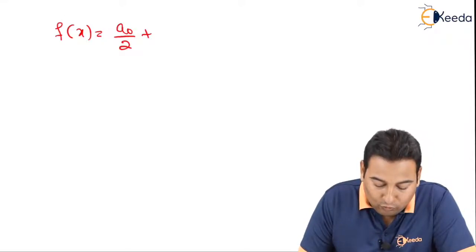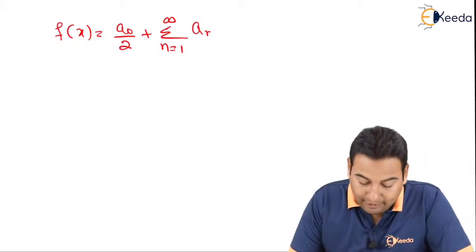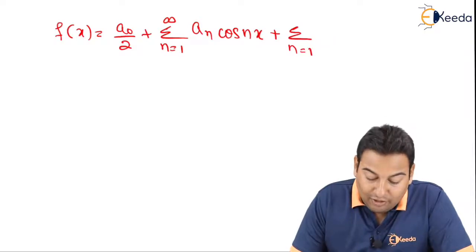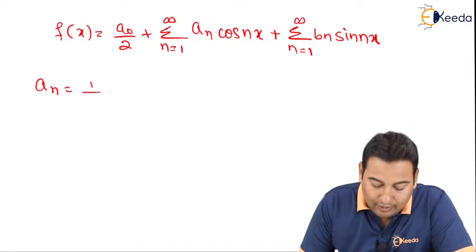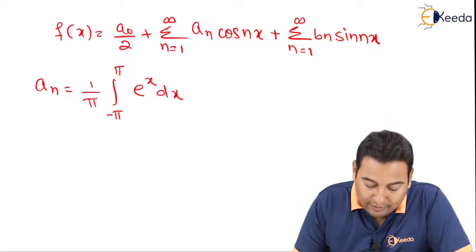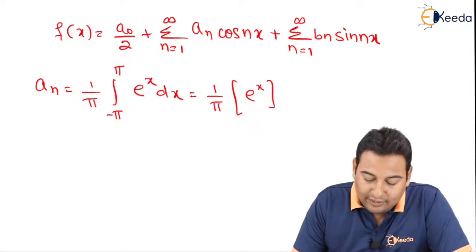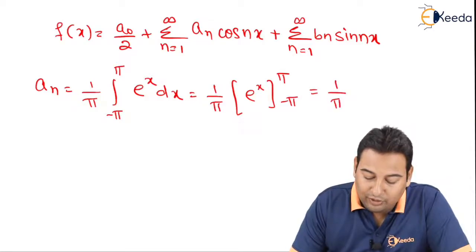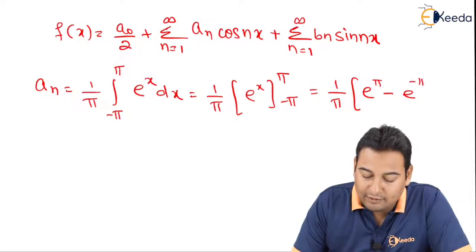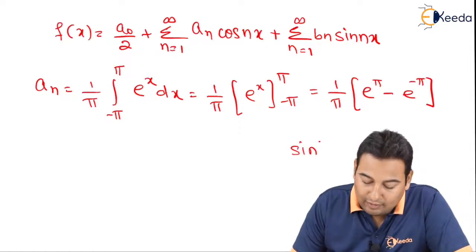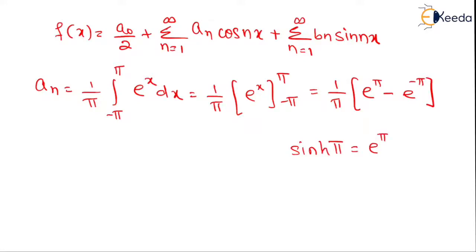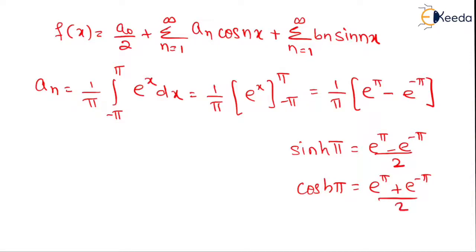The formula is f(x) = a₀/2 + summation from n=1 to infinity of aₙ cos(nx) + summation from n=1 to infinity of bₙ sin(nx). Three things we need to find: a₀, aₙ, and bₙ. The formula for a₀ is (1/π) times the integral from −π to π of f(x) dx, which is (1/π) times the integral of eˣ dx. Integration of eˣ is eˣ, so substituting limits gives e^π − e^(−π). Remember the formula: sinh(π) = (e^π − e^(−π))/2 and cosh(π) = (e^π + e^(−π))/2.